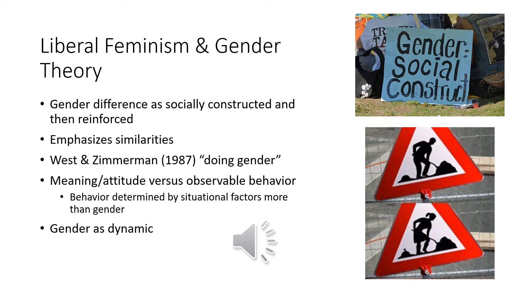Liberal feminism and gender theory are technically slightly different but very similar — gender theory grew out of liberal feminism. Liberal feminism and gender theory basically minimize the innate or biological differences between sexes. They see males and females as inherently more similar, with gender differences being really socially constructed. If you're doing a theory paper on feminist theory, you might try searching for 'gender theory' — seeing that term tells you you're using a liberal feminist approach.